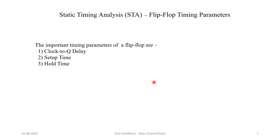Hi friends, welcome back. In the previous chapter of the static timing analysis series, we studied about different terminologies associated with the clock — for example, clock latency, clock skew, clock jitter, and clock uncertainty. In this chapter we are going to cover important timing parameters of a flip-flop. So let's get started. There are three important timing parameters associated with the flip-flop: clock-to-Q delay, setup time, and hold time. Now let's see each parameter in detail.